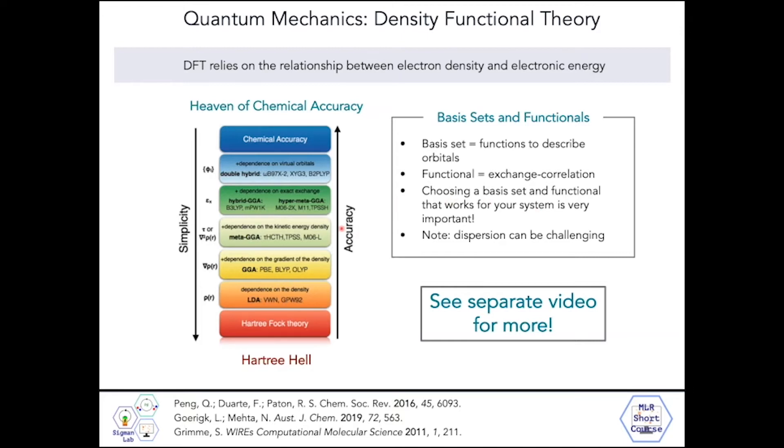Usually what people will represent this as is a Jacob's ladder where you're moving from Hartree-Fock theory, and then within DFT, you're moving to more and more complicated functionals all the way to the heaven of chemical accuracy. Many of the methods that we use in the Sigmund group are at this level and they're hybrid GGA and hypermeta-GGA functionals.